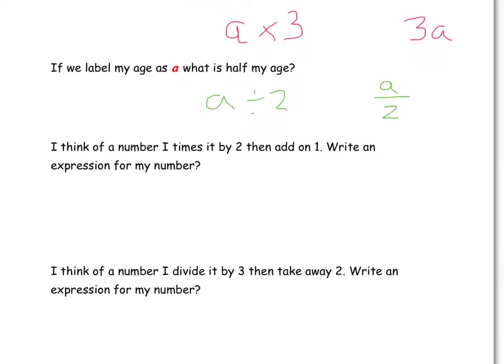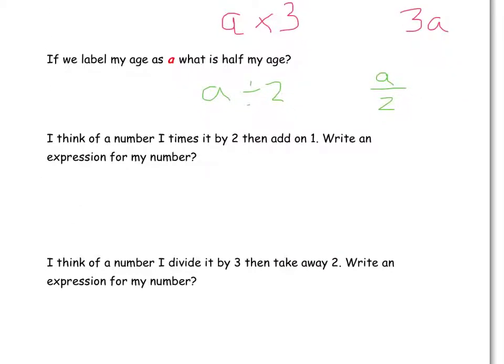Let's try and make a slightly more difficult question. It says, I think of a number. I times it by 2, then add on 1. Write an expression for my number. Now this time, we're not told a letter to use for my number. So we can even pick whatever letter we want. As we're looking at number, I'm going to pick n. And this time, we've got more than one thing that's happening to our value n.